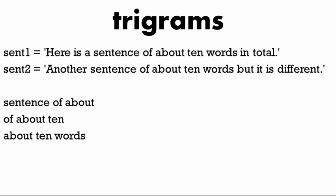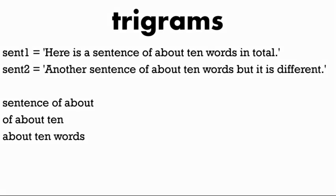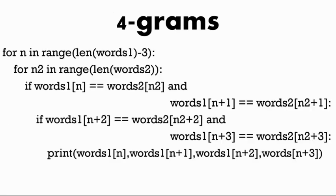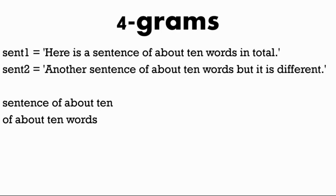Finally, we look at four-grams. We have four if statements chained together, and we print the four-grams. In the for loop we don't want to go to the end, so we use minus three. With the two sentences, we get two four-grams: sentence of about 10, and of about 10 words.